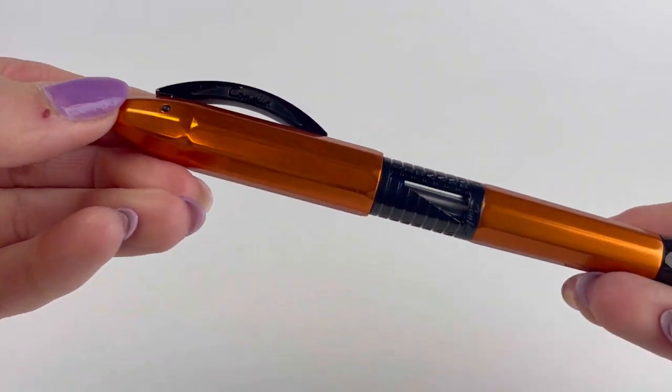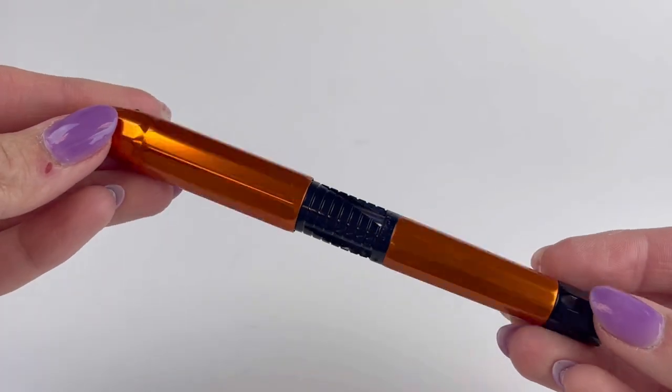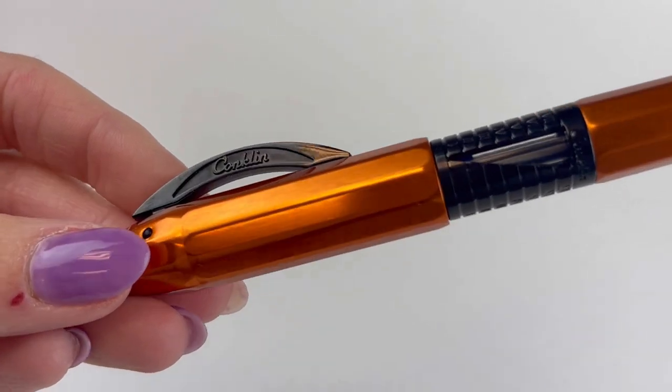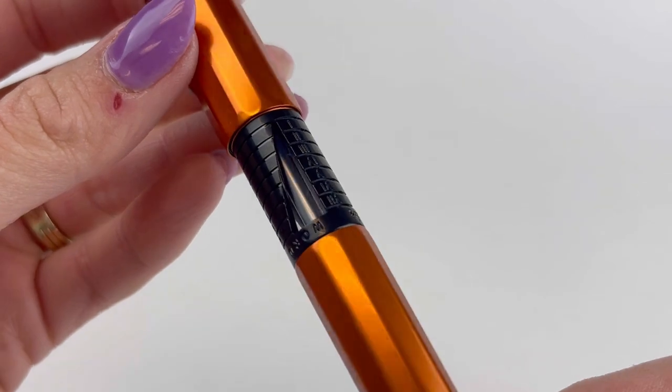Here's your first look at the Conklin Novak Classic 125th anniversary limited edition fountain pen. It comes in four different colors. This is the orange and the orange as well as the red and green come with the black PVD plated trims.